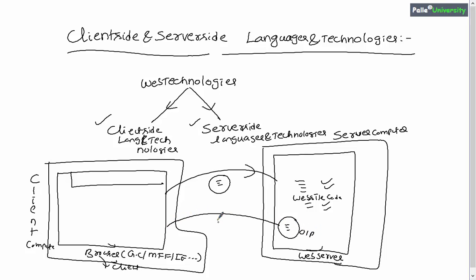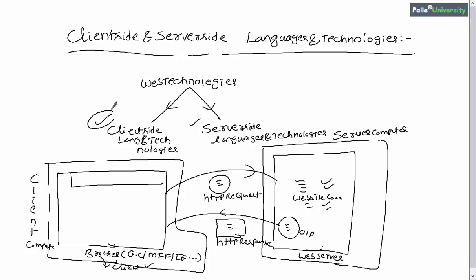The data sent from the browser to the web server is technically called an HTTP request, and the output sent from the web server back to the browser is technically called an HTTP response. A client is something that always expects some output, and a web server is something that always sends output to the client.